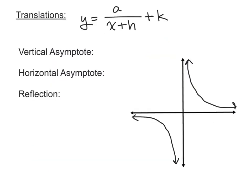Now, thinking about the parent graph, we want to see what translations happen when we start adding numbers to the equation. For the vertical asymptote — which was at x equals 0 — if our denominator becomes x plus h instead of just x, then x plus h can never equal 0, which means x can never equal negative h. So our vertical asymptote becomes the line x equals the opposite of h, shifting the graph left or right h units, so the asymptote moves to negative h.